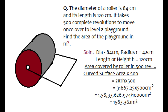The area covered by the roller in 500 revolutions equals the curved surface area of the roller multiplied by 500. The curved surface area is 2πrh, and multiplying by 500 gives the total area covered. Replacing the values of radius and height, we get approximately 1 crore 58 lakh 33,000 centimeter square. Converting to meter square by dividing by 10,000, we get 1583.36 meter square as the answer.